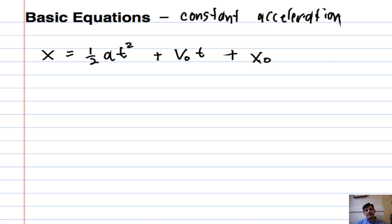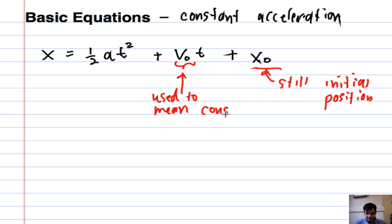And what I want to do is kind of contrast this with what we did with the buggy lab and the constant velocity unit before. First, this is still initial position. That still stays the same. What I want to kind of note here though is that this v naught before, in the first unit, this used to mean constant velocity, and now it means initial velocity.